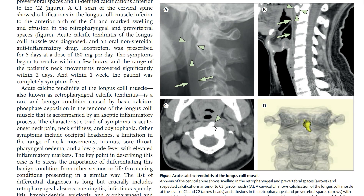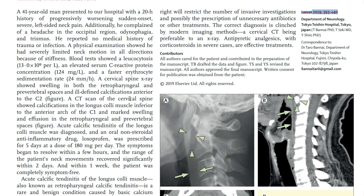You can see the calcification here — it's hard to depict on the radiograph — but you can see the prevertebral soft tissue swelling. Importantly, the CRP or C-reactive protein can be elevated in this case up to 124, which would normally suggest a bacterial infection, but clearly there is no infection here. This makes it an important differential diagnosis, because if you call it an abscess, the surgeon goes in and tries to drain pus.